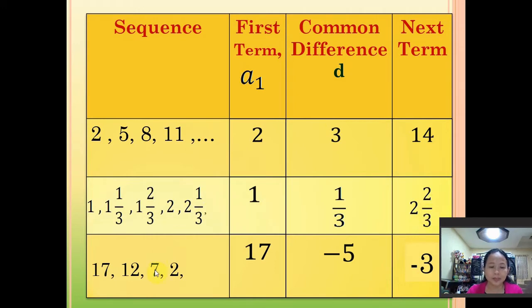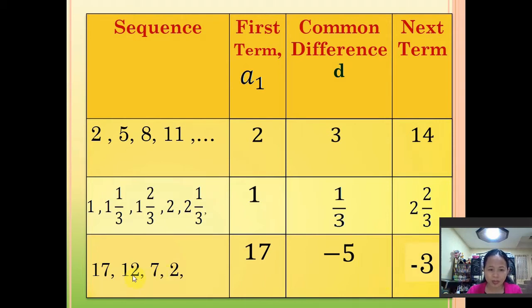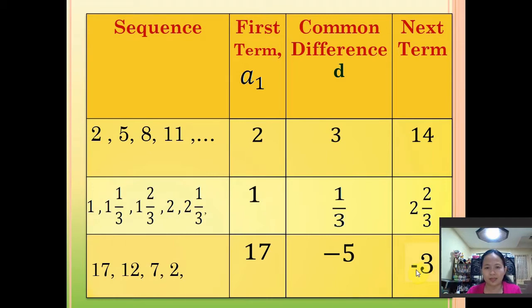For the third sequence, the first term is 17 and our common difference is negative 5. That is, 12 minus 17 is negative 5, 7 minus 12 is also negative 5, and 2 minus 7 is negative 5. Now to get the next term, we have 2 plus negative 5, and that is negative 3. So the next term of this sequence is negative 3.